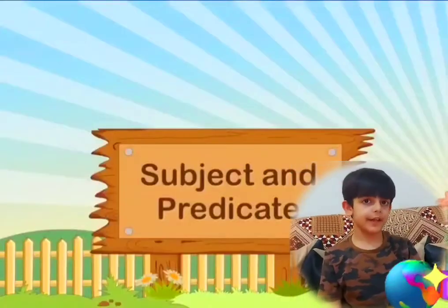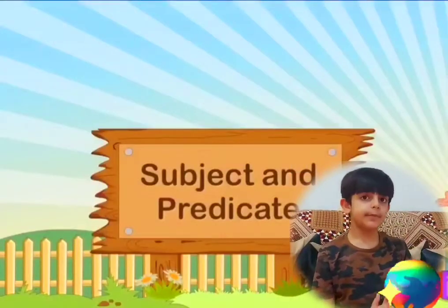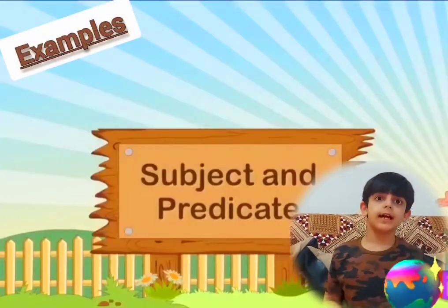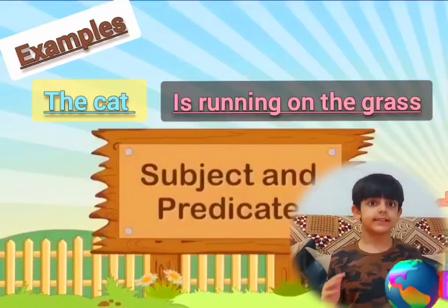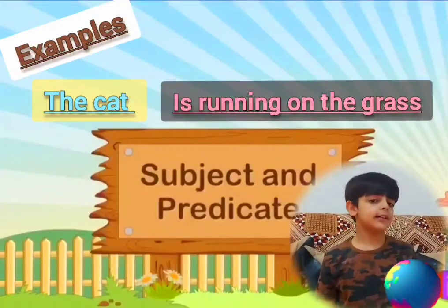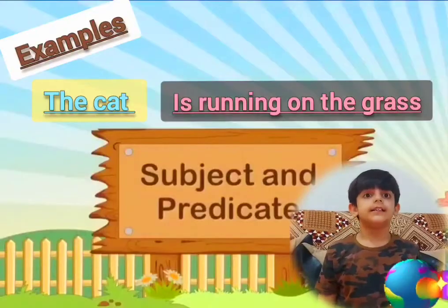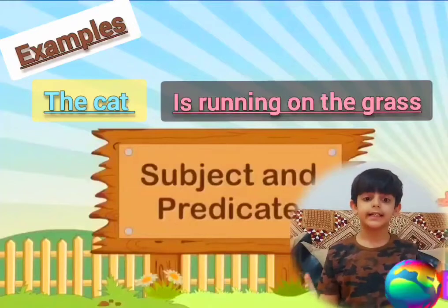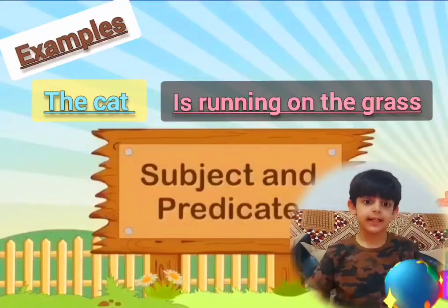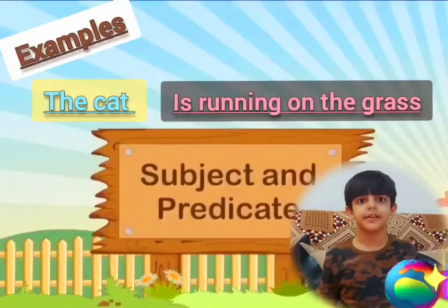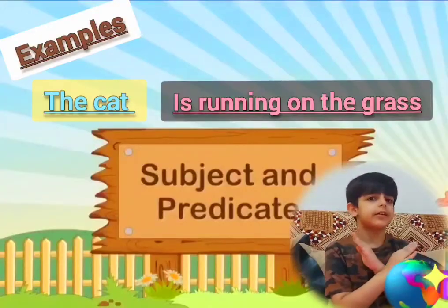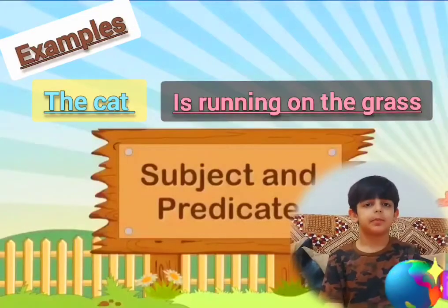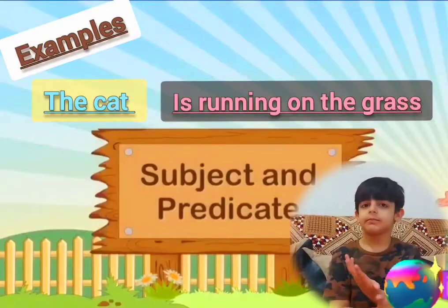Here are some examples. 'The cat is running on the grass' — the cat is the subject, and 'is running on the grass' is the predicate. Together they make a complete sentence. It is not just a subject alone — a subject alone would just be 'cat,' a single word with nothing else.